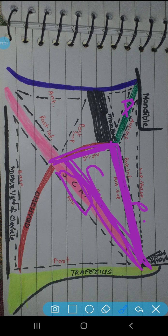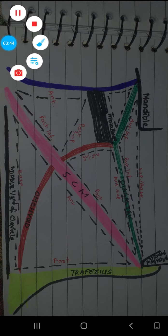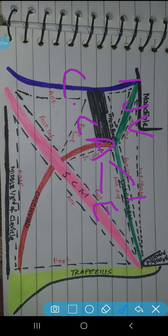The anterior inferior boundary of the carotid triangle is formed by the superior belly of omohyoid. Now let's look at the contents: internal jugular vein, common carotid artery which divides into internal and external, vagus nerve, and the carotid sheath.